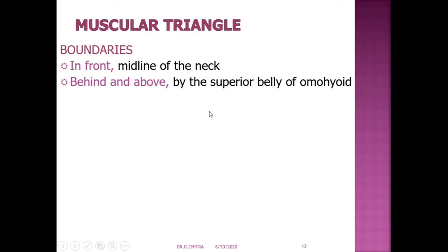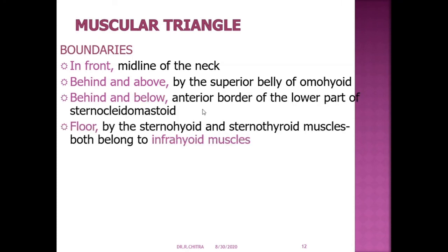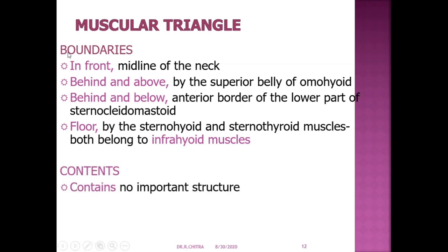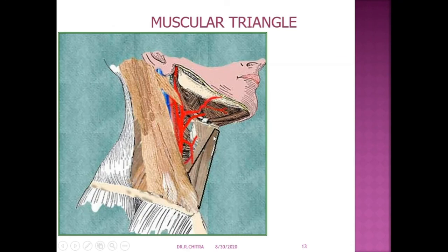Muscular triangle: in front by the midline of the neck, behind and above by the superior belly of omohyoid, behind and below by the anterior border of the lower part of the sternocleidomastoid. The floor is formed by the sternohyoid and sternothyroid muscles, which are the infrahyoid muscles. The name itself tells us it contains muscles — it contains no important structures except the floor muscles.